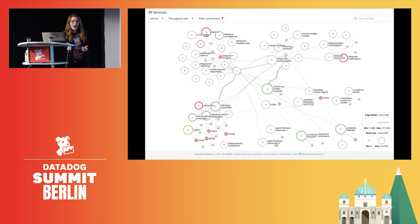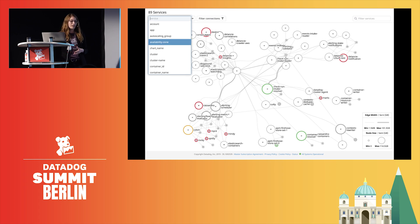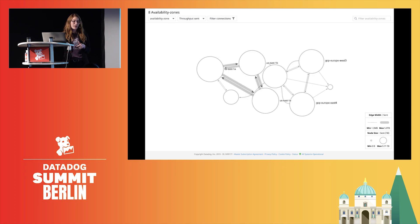A huge factor in reducing your network costs hinges on reducing your cross-availability zone traffic. Network flows can be aggregated across any tag. And suppose you are migrating towards a multi-cloud strategy — cross-region traffic can be both pricey and preventable. By viewing your network traffic by zone, you can see here that there are multiple zones and multiple cloud providers sending traffic to each other.